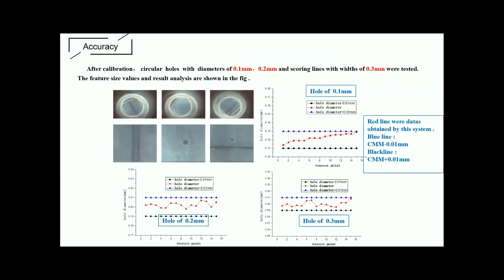To evaluate the quantitative accuracy of the system, circular holes with diameters of these parameters, and scoring lines with width of 0.3 mm were tested. The feature size measurements and result analysis are shown in the figure. The red line data is obtained by the system. The blue line data is the nominal value, and the black line data is obtained by CMM at 0.01 mm resolution.